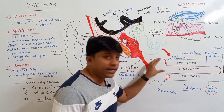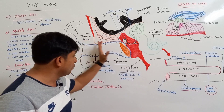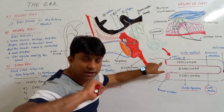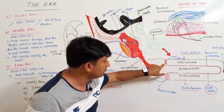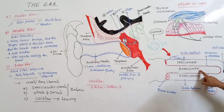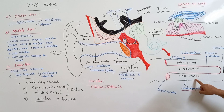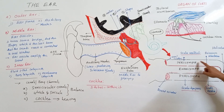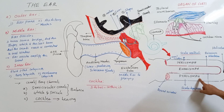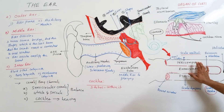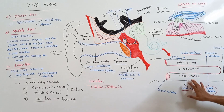Stapes is connected to the oval window, so all the sound vibrations of the tympanum are finally sent to the oval window. Scala vestibuli is also called the vestibular duct, and scala tympani is also called the tympanic duct in some books. For your NCERT, remember: scala vestibuli, scala media, and scala tympani.